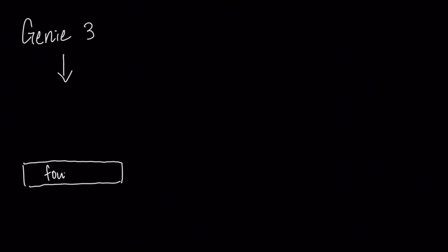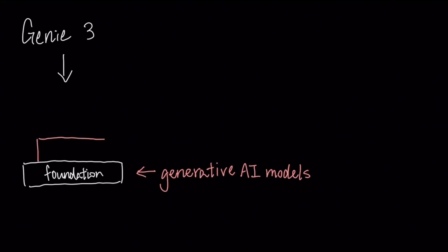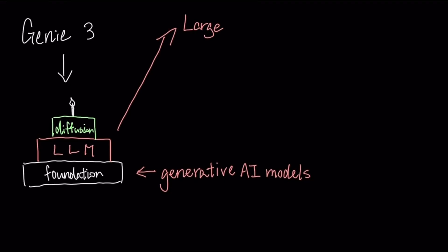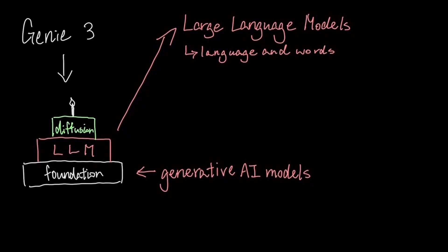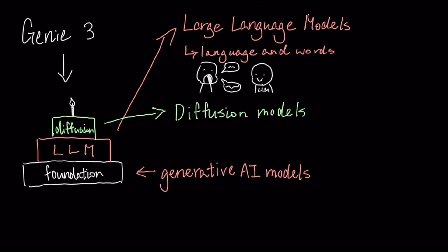Genie 3 builds upon the foundations of generative AI models, likely incorporating techniques from areas like large language models and diffusion models. Large language models excel at understanding and generating human language, allowing Genie 3 to interpret text prompts effectively. Diffusion models, on the other hand, are powerful at generating realistic and detailed images and videos.